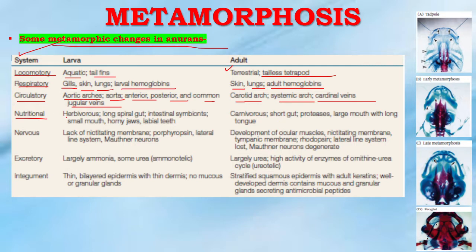In the nutritional system, the larva is herbivorous, with a long spiral gut, intestine, symbionts, small mouth, horny jaws, and labial teeth, but in the adult it is carnivorous in habit, with a short gut, proteases, and a large mouth with a long tongue.